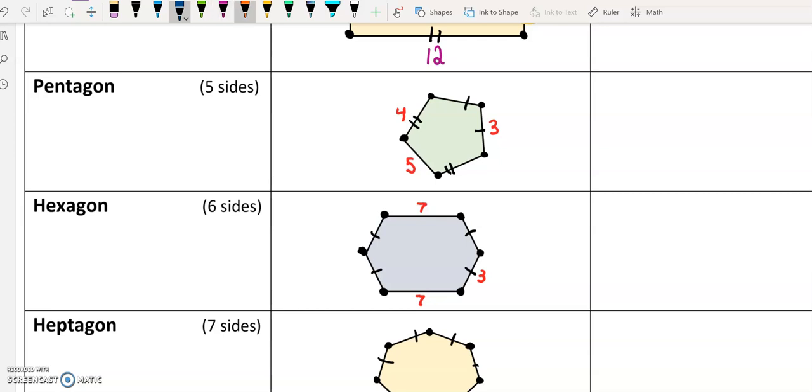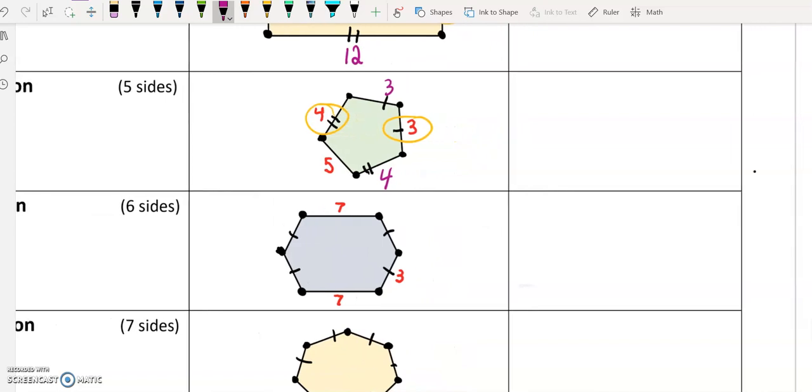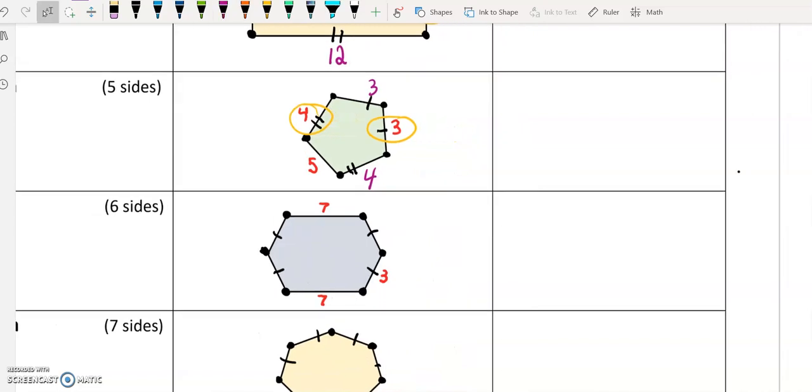This side is a four. We should take note that there is another two-lined side over here. That means that is also a four. This is a three. It has one tick mark. So anywhere else I see a one tick mark is also going to be a three.